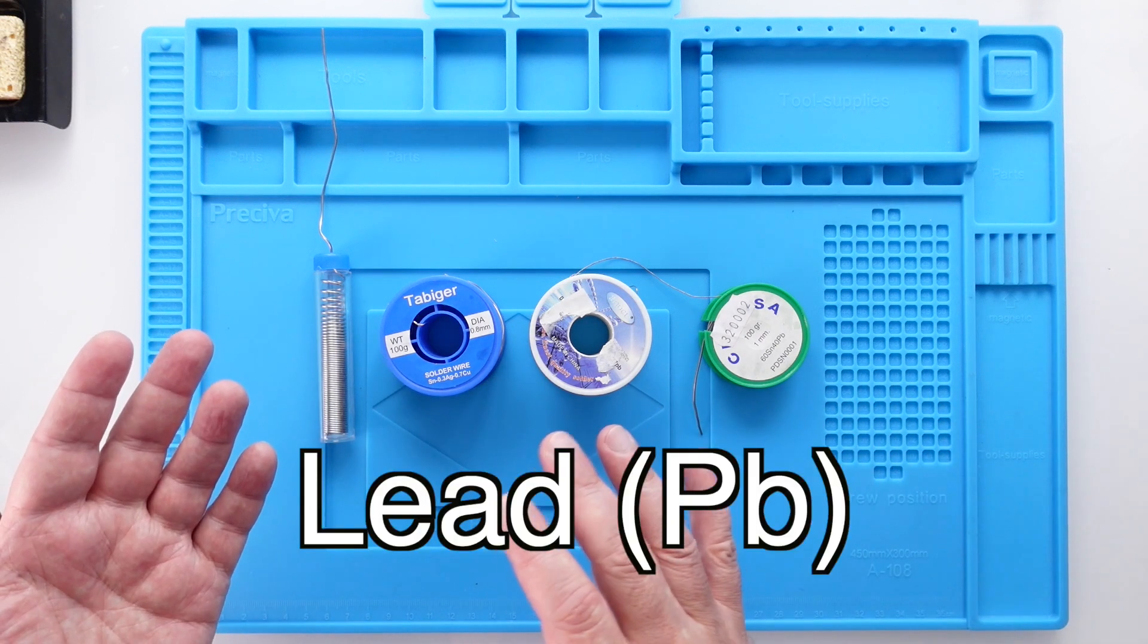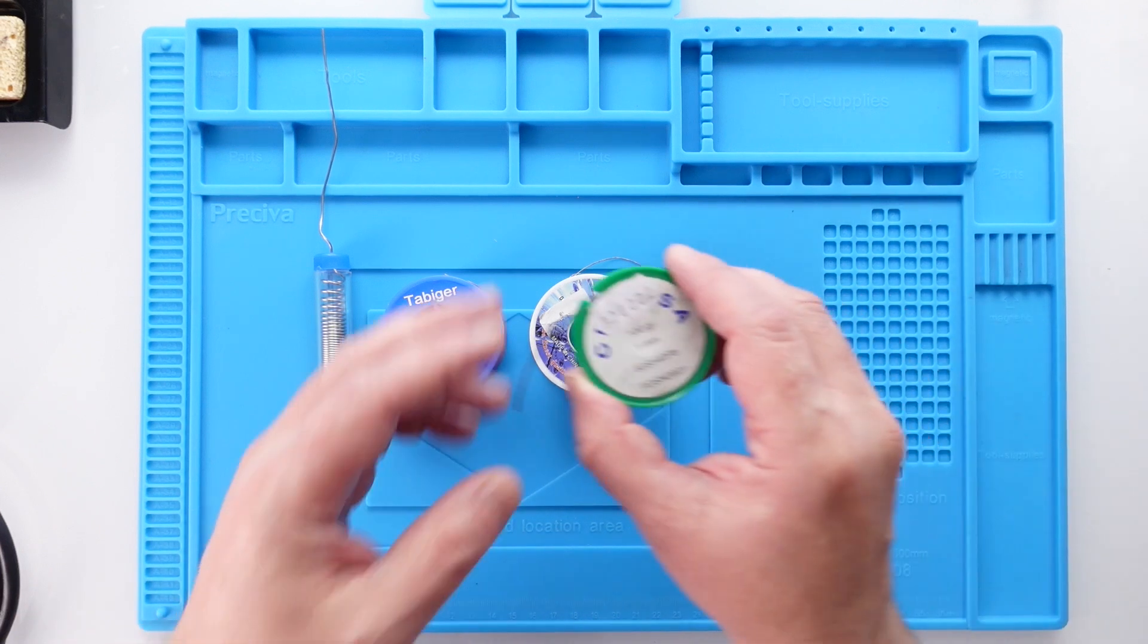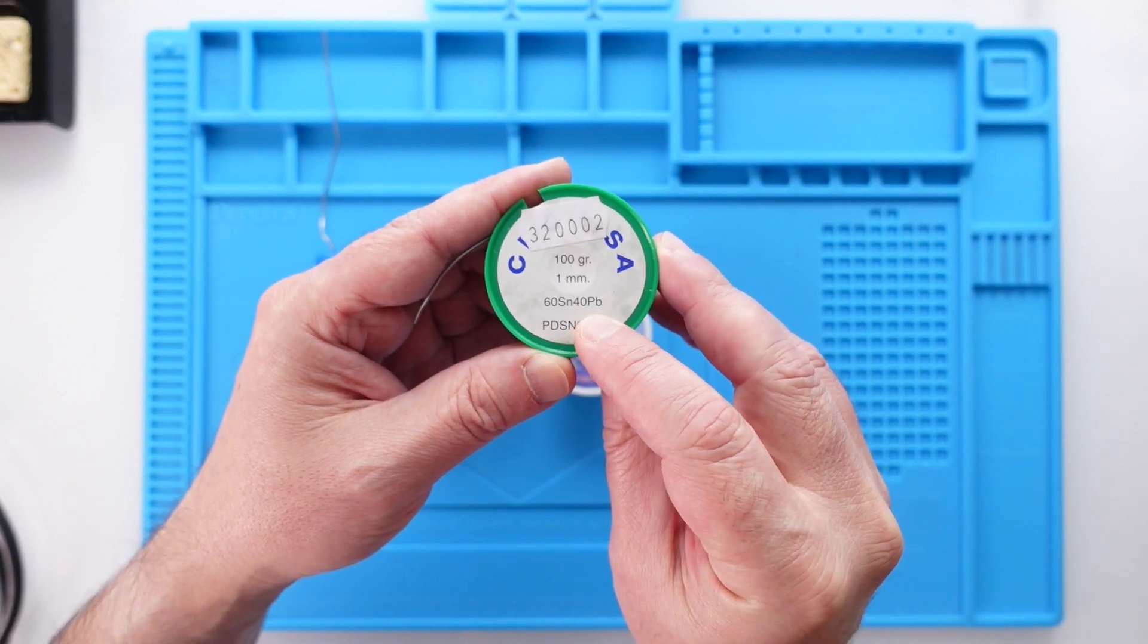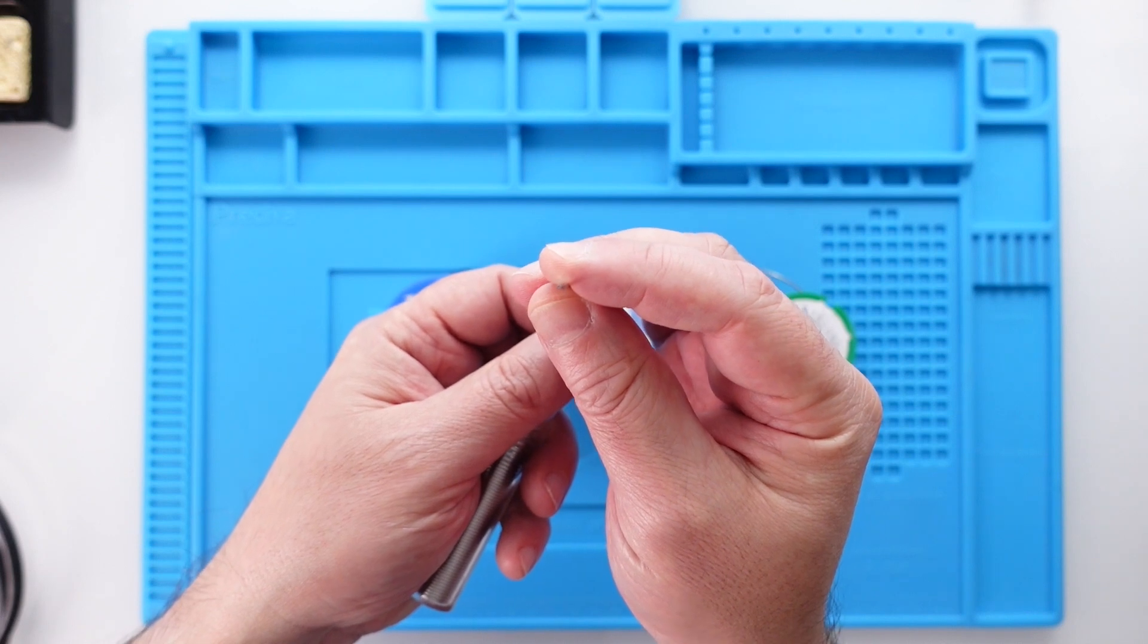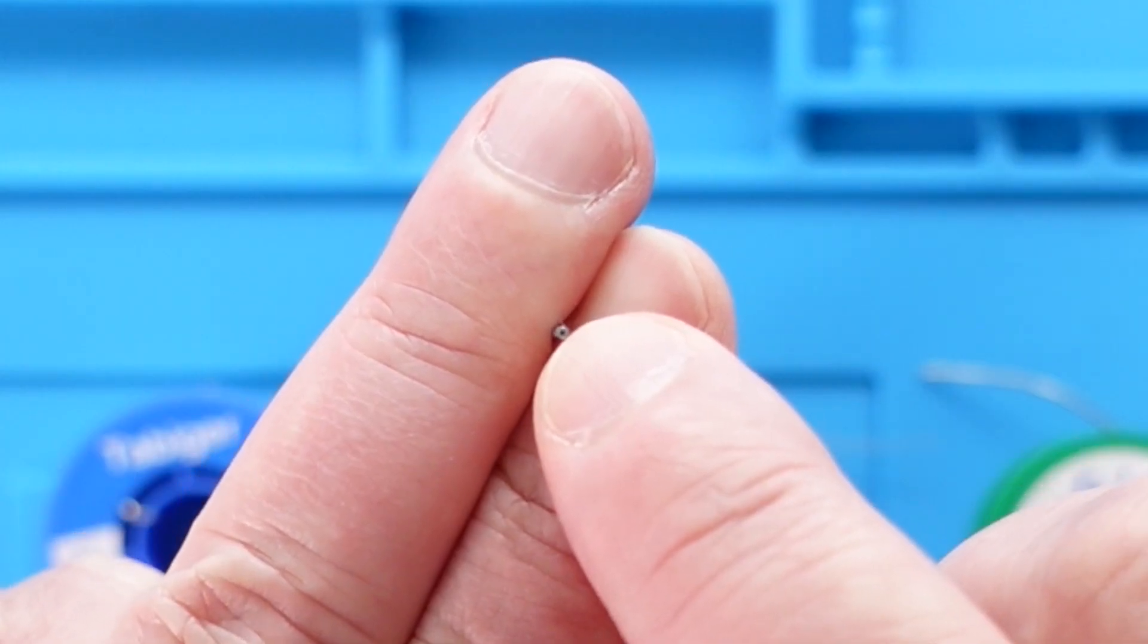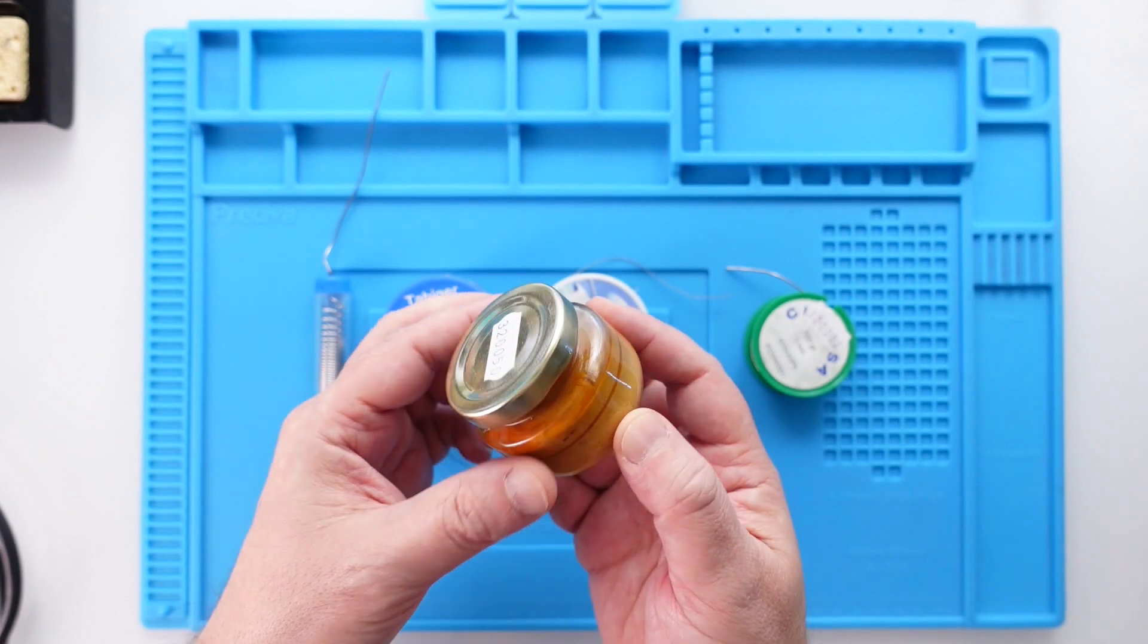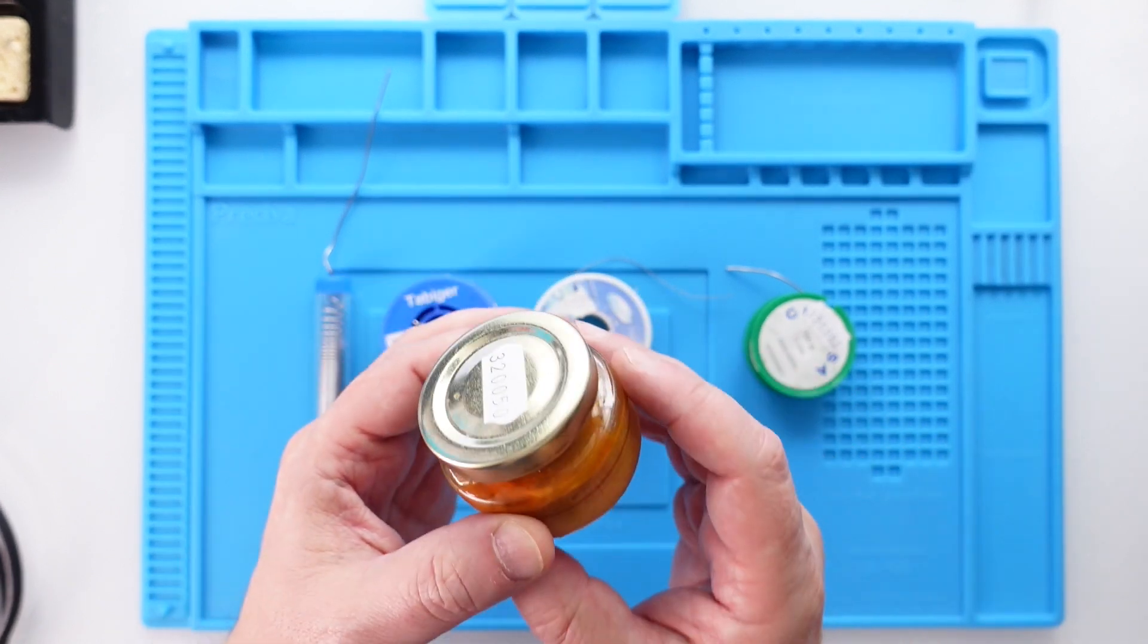Some contain lead, which can be a bit toxic but melts faster. Usually I like to use a 60-40, which means 60% tin and 40% lead. Some solder is called rosin core, which means that inside the solder itself there is flux.